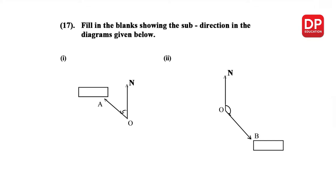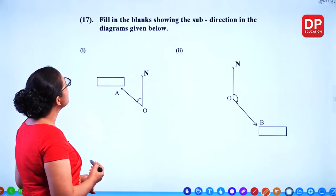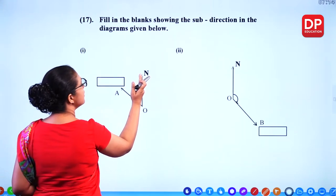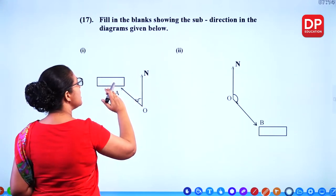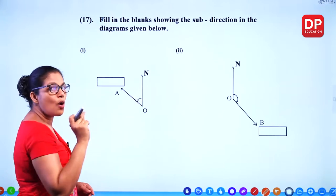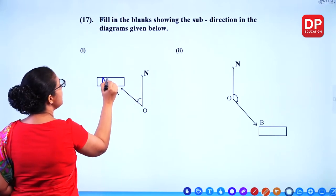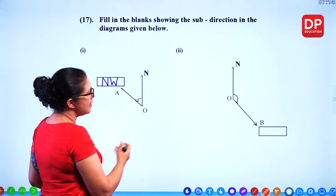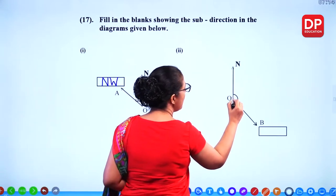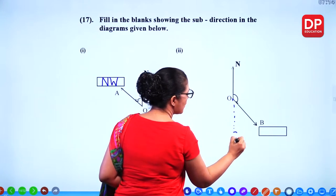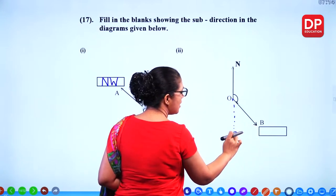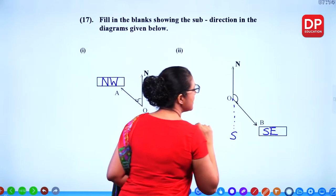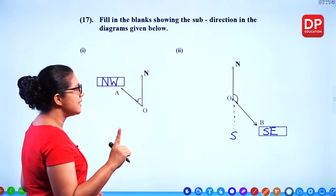Fill in the blanks showing the sub-direction in the diagrams given below. This is north — so the sub-direction towards the west side is NW, north west. And since this is north, we know this is south — so this direction is south east (SE), in between south and east.